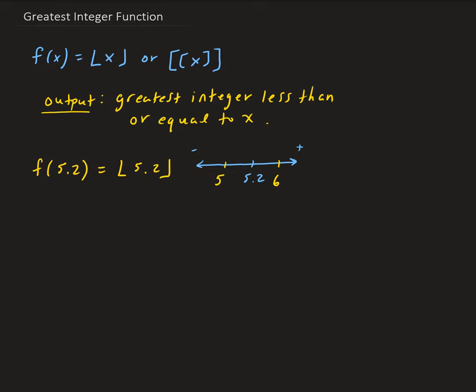We want to determine the greatest integer that's smaller than or equal to x. Our input is 5.2, so the greatest integer that's less than 5.2 is going to be 5.